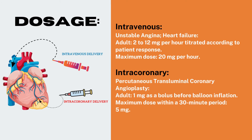Intravenous for unstable angina and heart failure — Adult: 2 to 12 mg per hour, titrated according to patient response; maximum dose 20 mg per hour. Intracoronary for percutaneous transluminal coronary angioplasty — Adult: 1 mg as a bolus before balloon inflation; maximum dose within a 30-minute period: 5 mg.